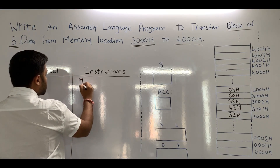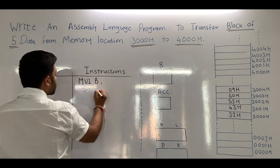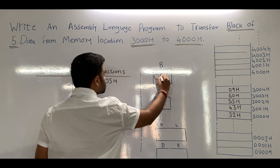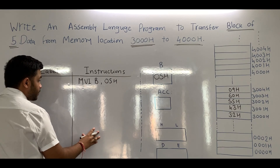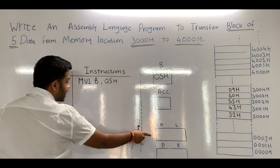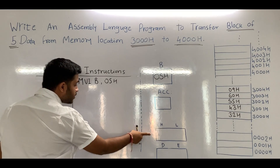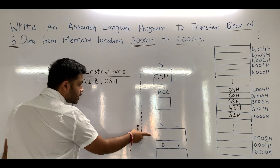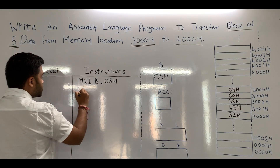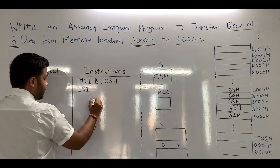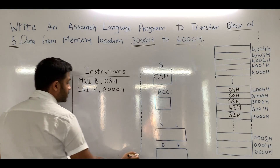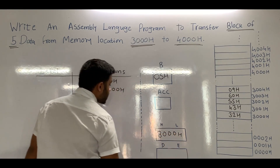To load data into register B, we will use the instruction MVI B, 05H — it means in register B, we initialize the counter to 05H. After that, we have to initialize the DE and HL pairs. HL is known as the source pointer — in HL, we are going to store the memory location from which we have to receive data to the microprocessor. So we will use the instruction LXI H, 3000H — it means in the HL, we load the value 3000H.